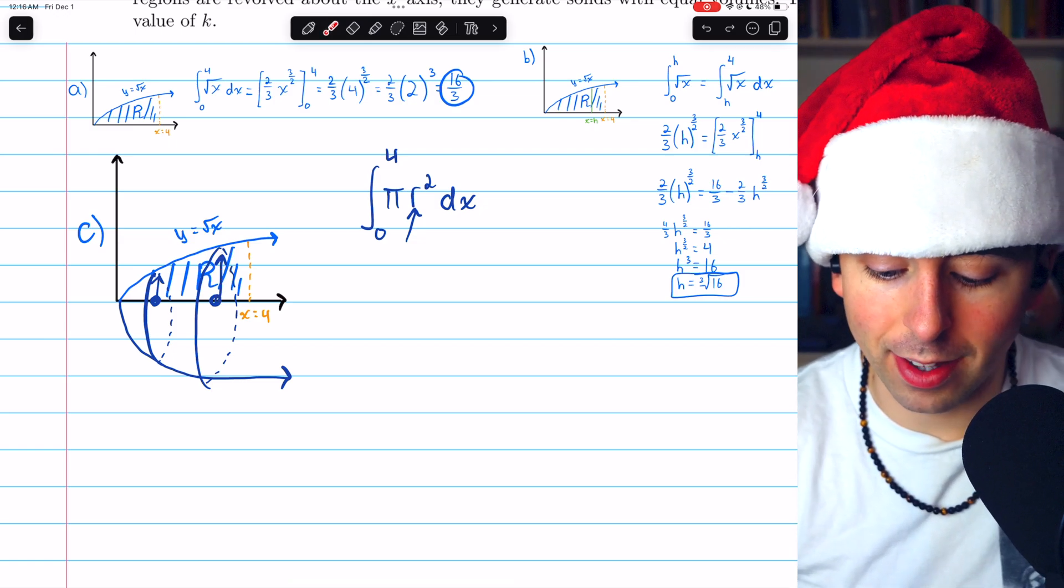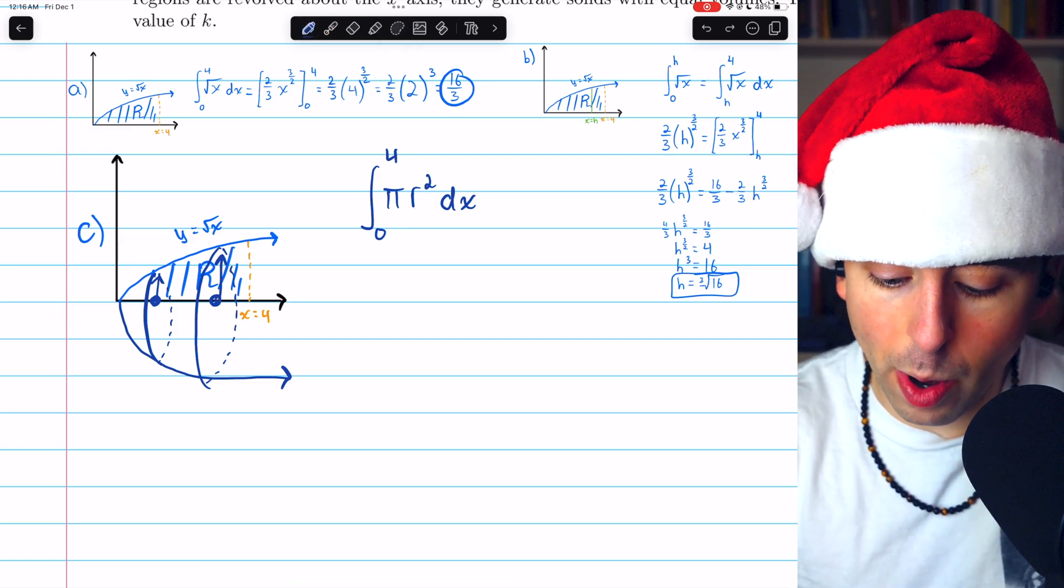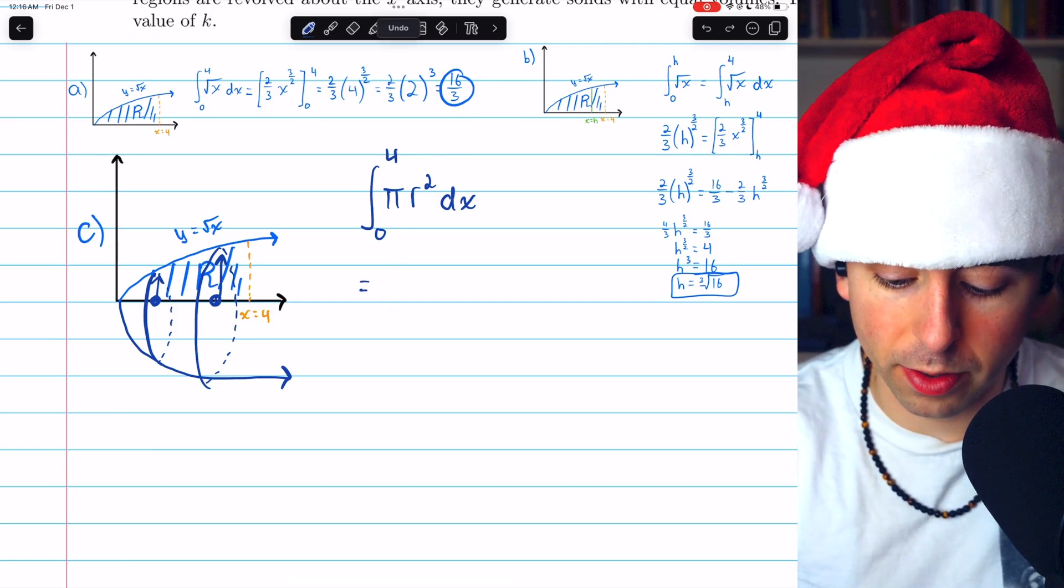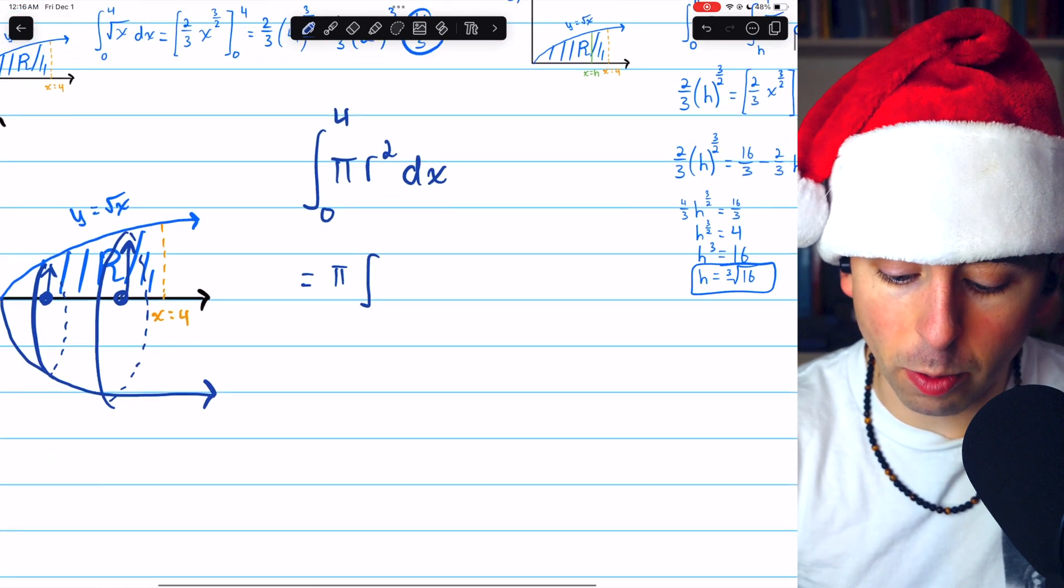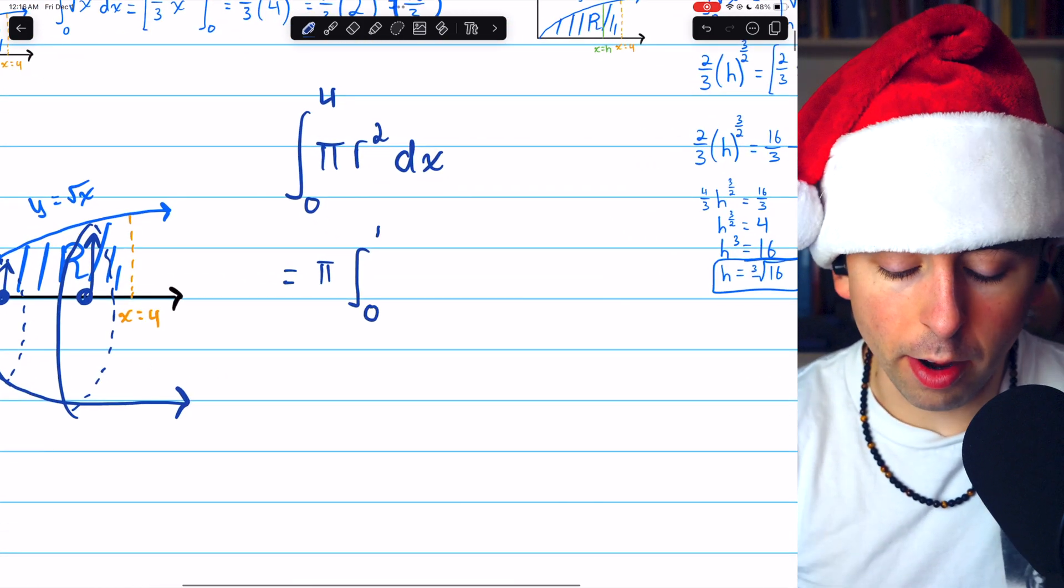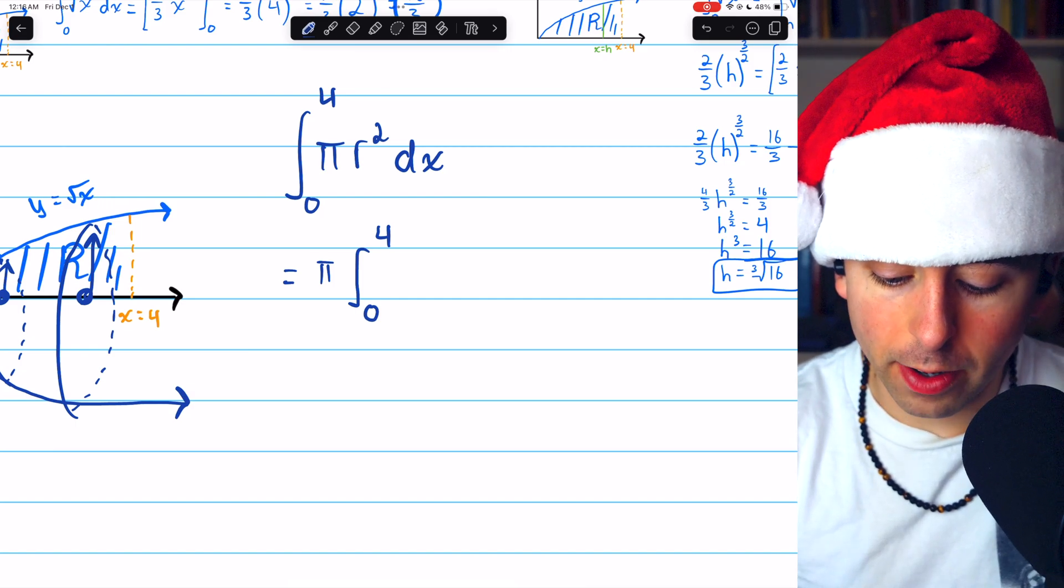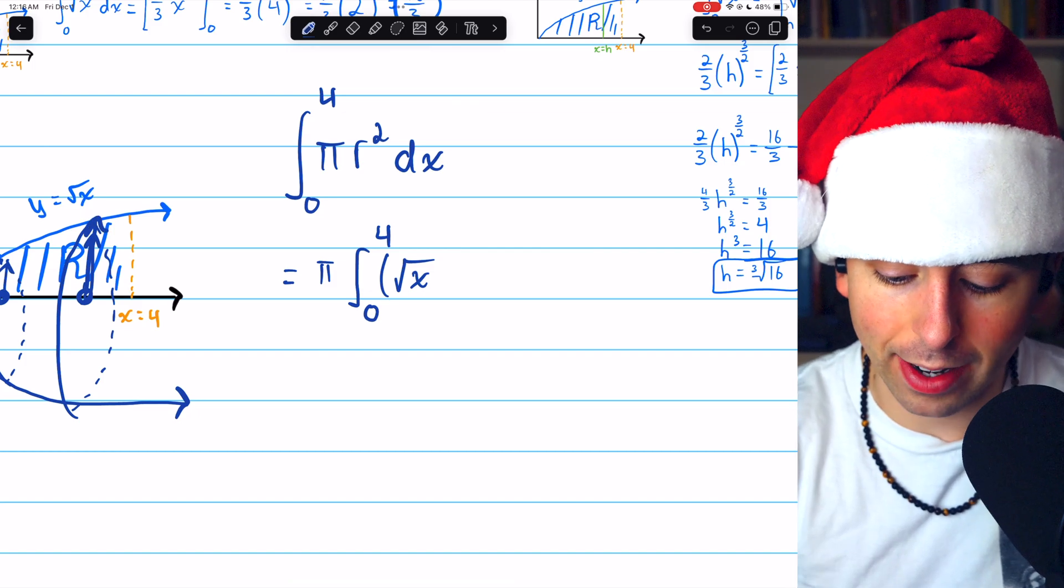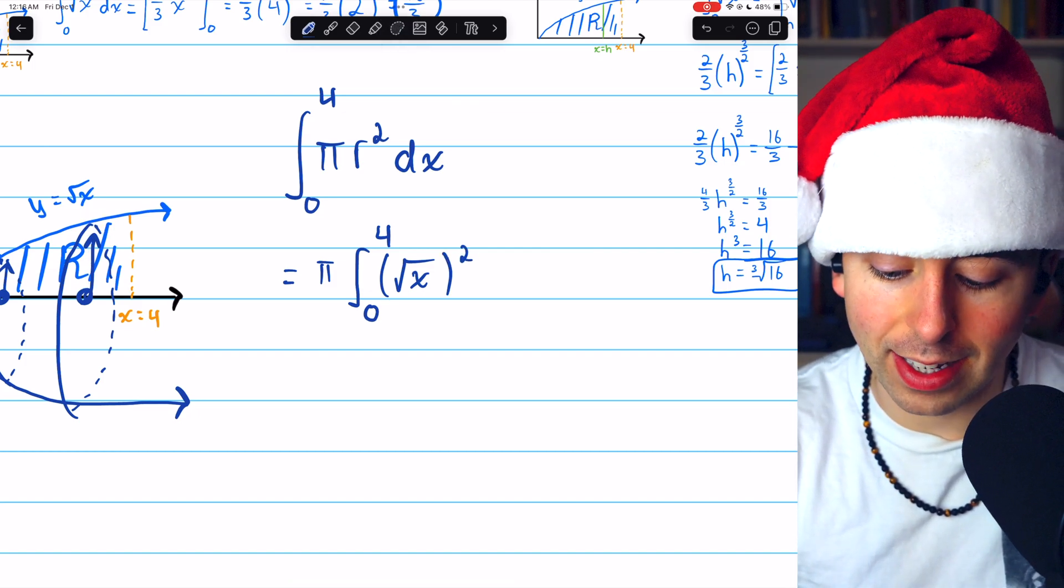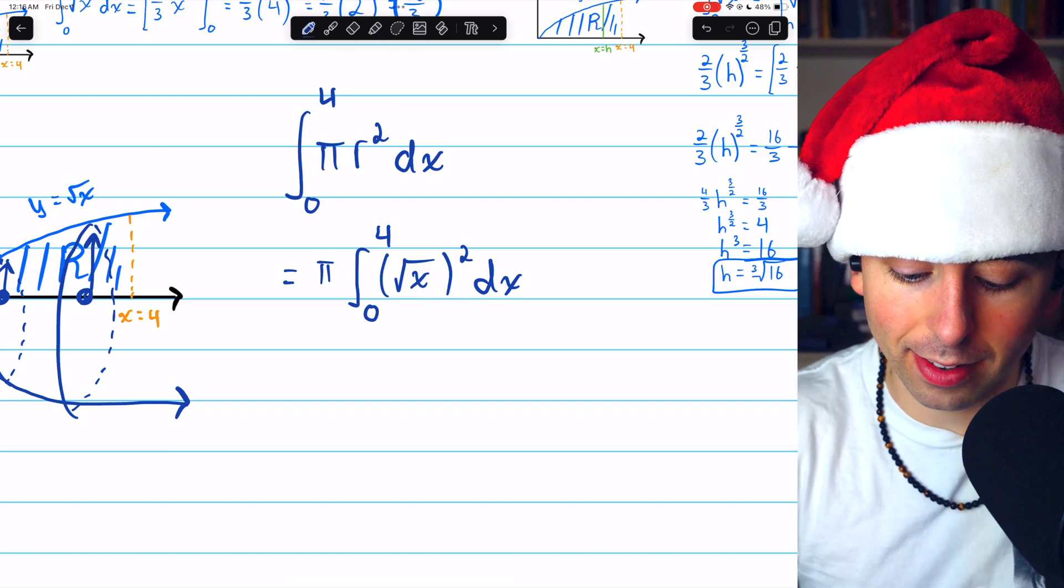So we can rewrite this integral, writing R squared in terms of X. This is, let me take the pi out. So this is pi times the integral from 0 to 4 of the radius squared. The radius is the function. That's what gives us the height. That's root X. And we have to square that. And then this is getting integrated with respect to X.